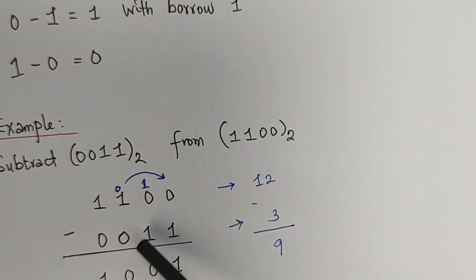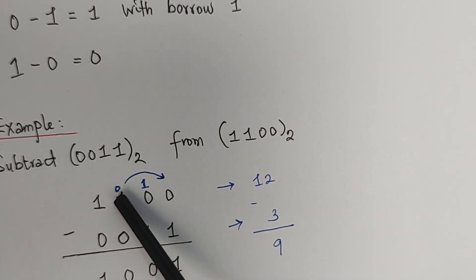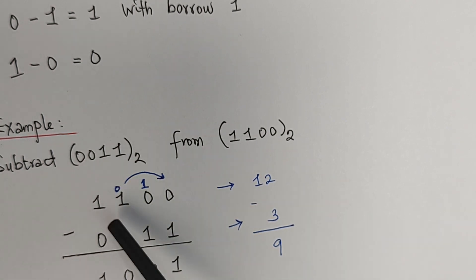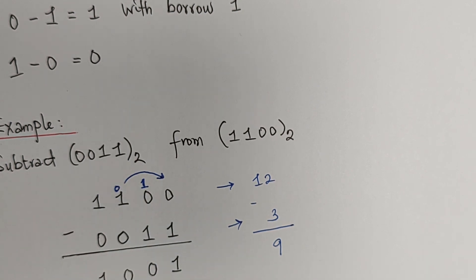So this is how we have the borrow 1 here. Now, with this, we go to the next digit we're supposed to subtract from. We have 1 minus 1, which will give us 0. Remember, when we took 1 here, it had 0 as the present value. So 0 minus 0 will give us 0. Now, 1 minus 0 will give us 1.